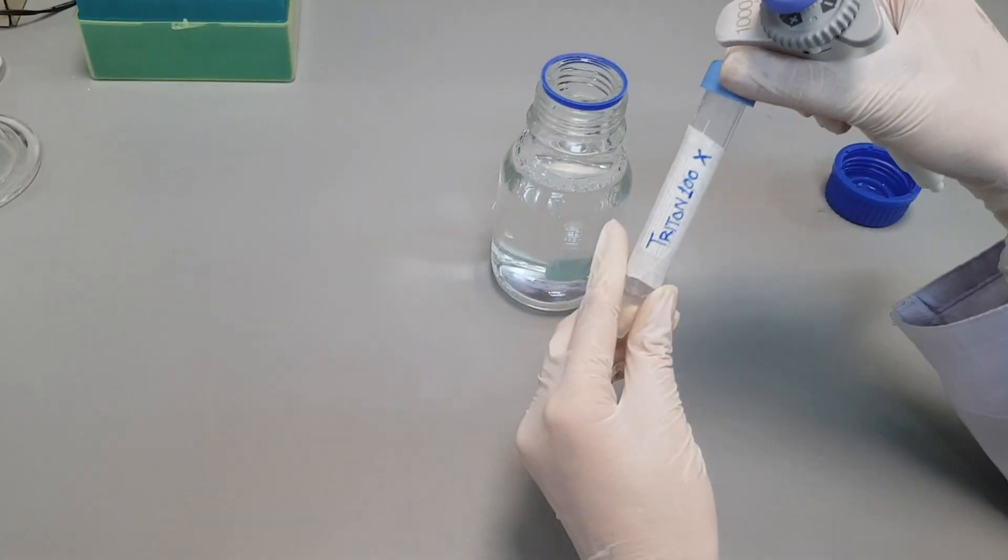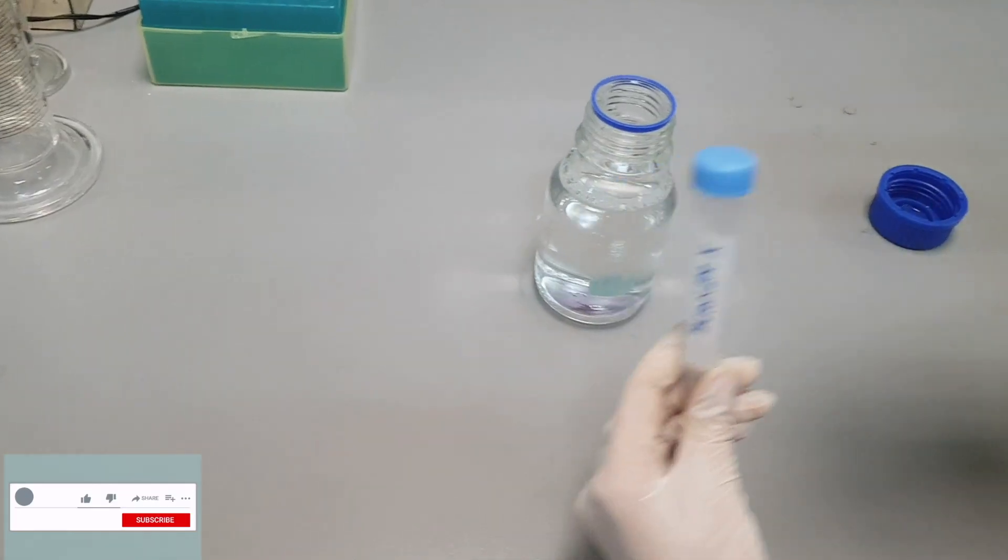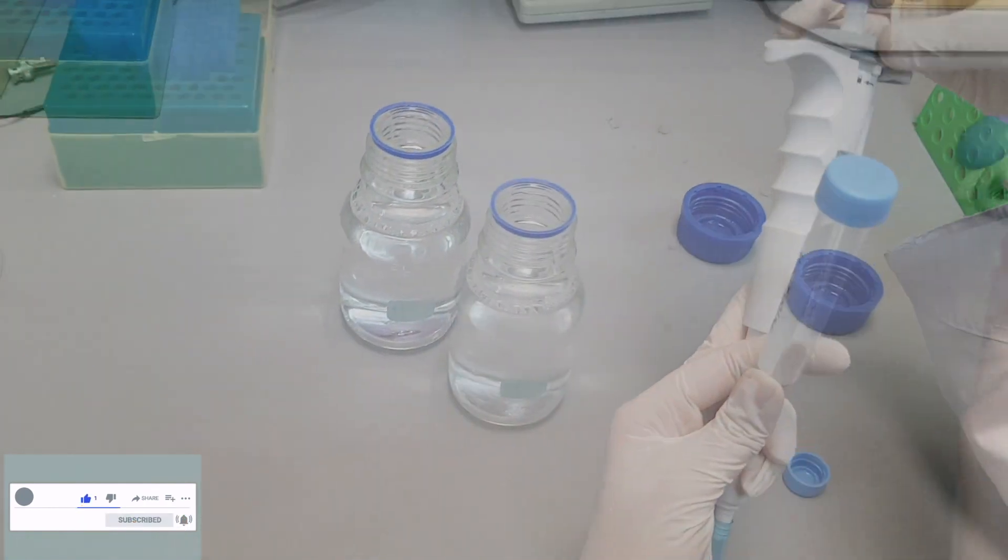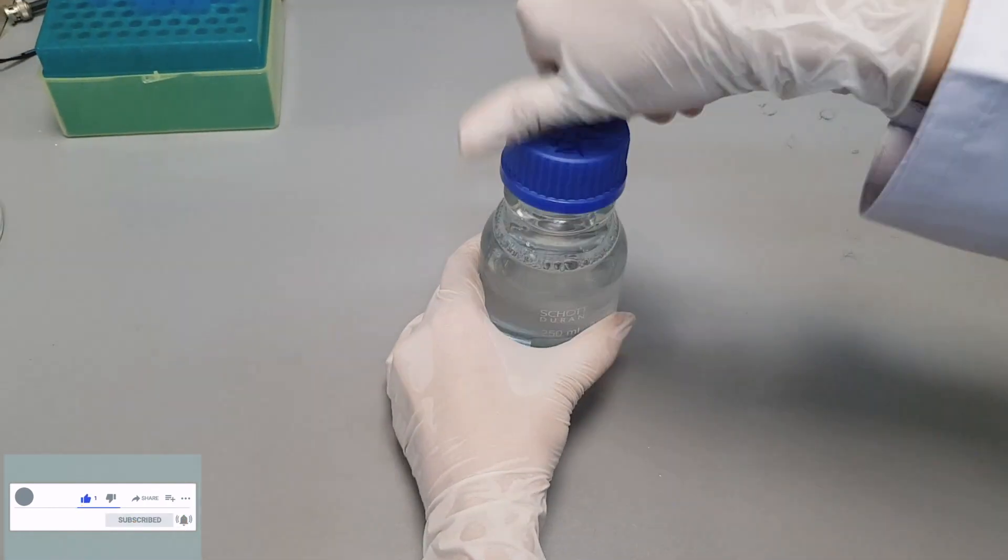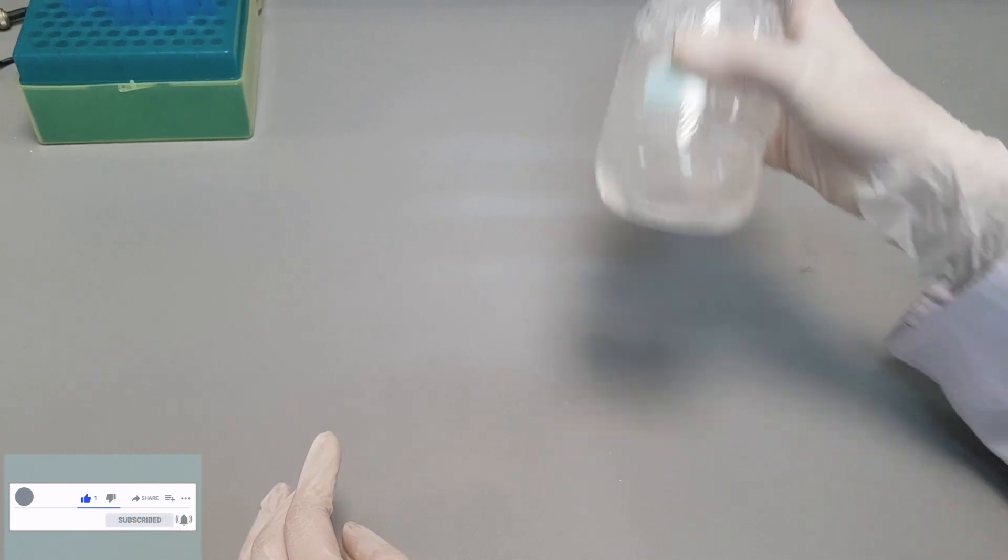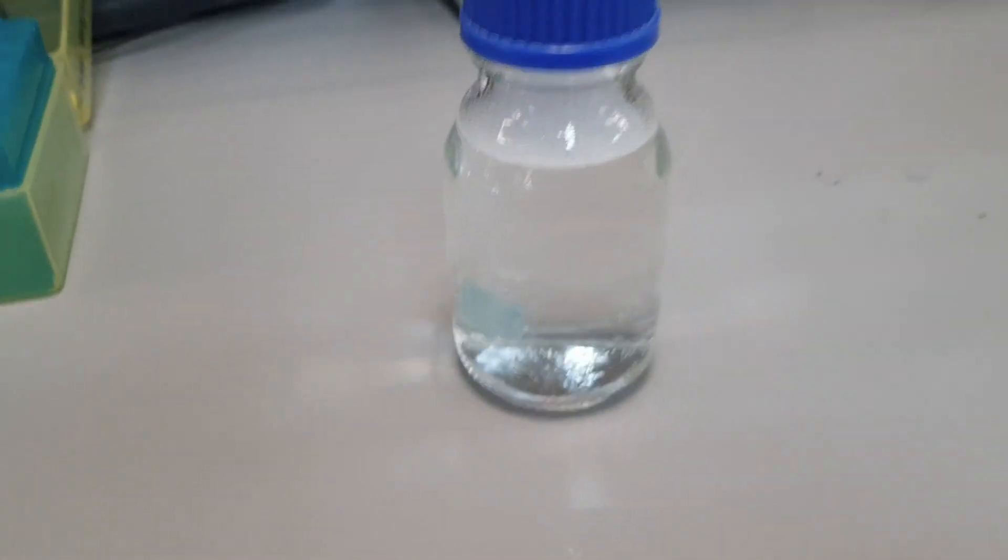After being autoclaved, add 2.5 ml of Triton 100x to this solution and mix it well. Then leave it for 15 minutes. Our solution A is ready to use now.